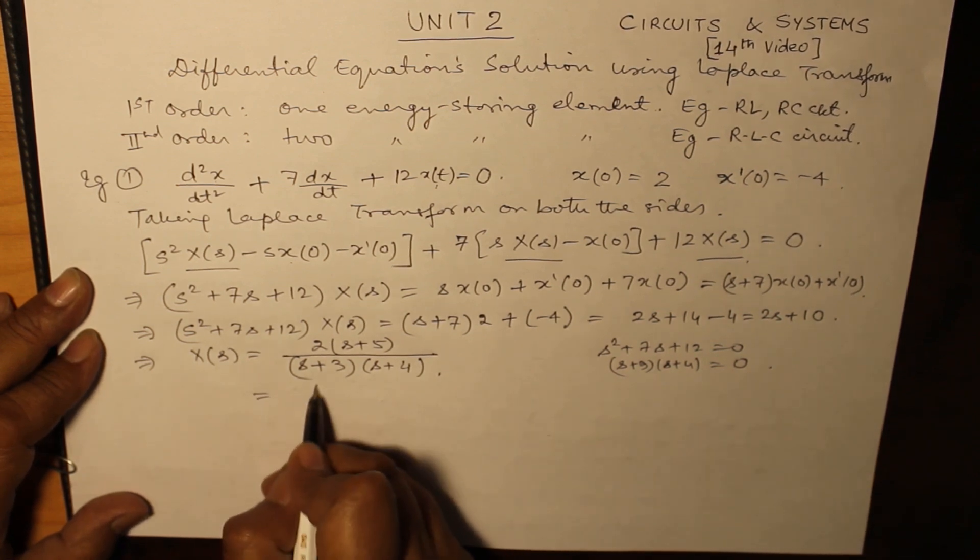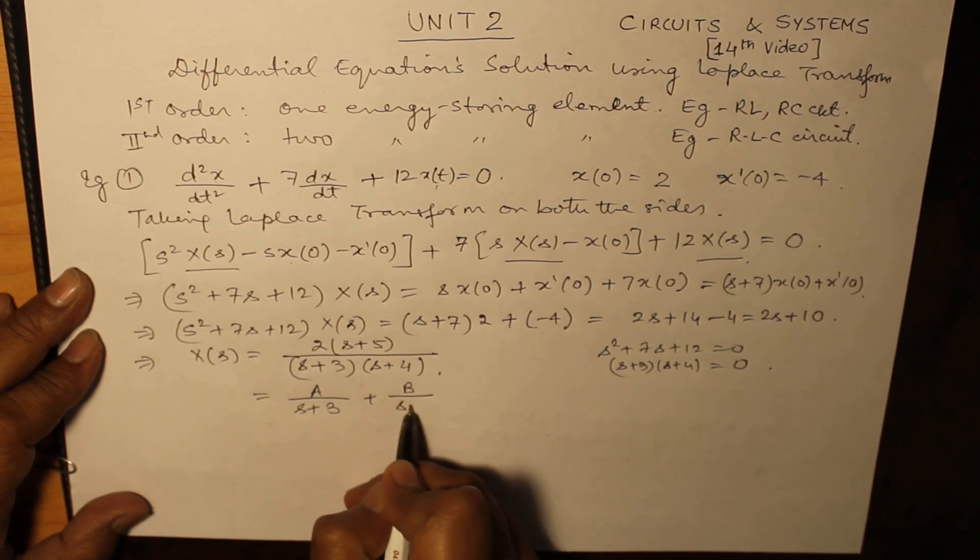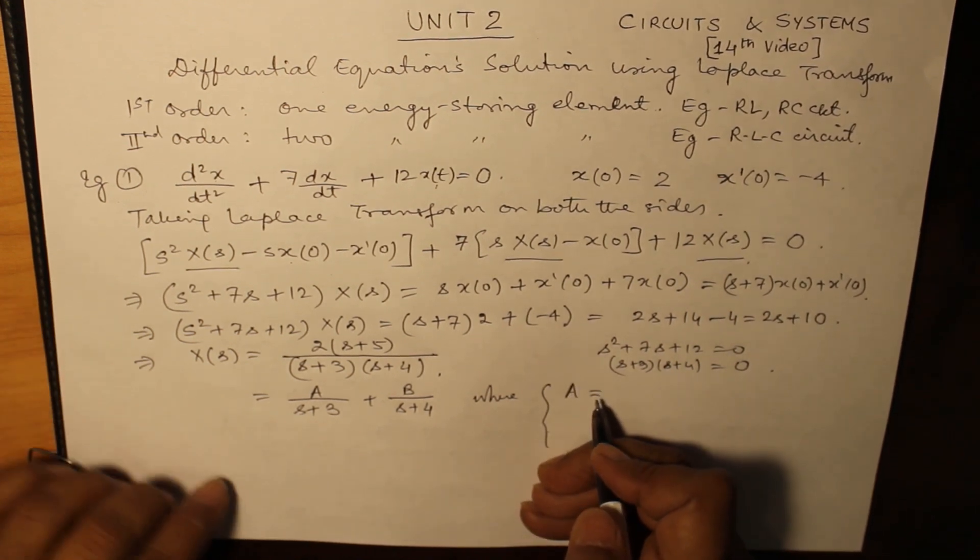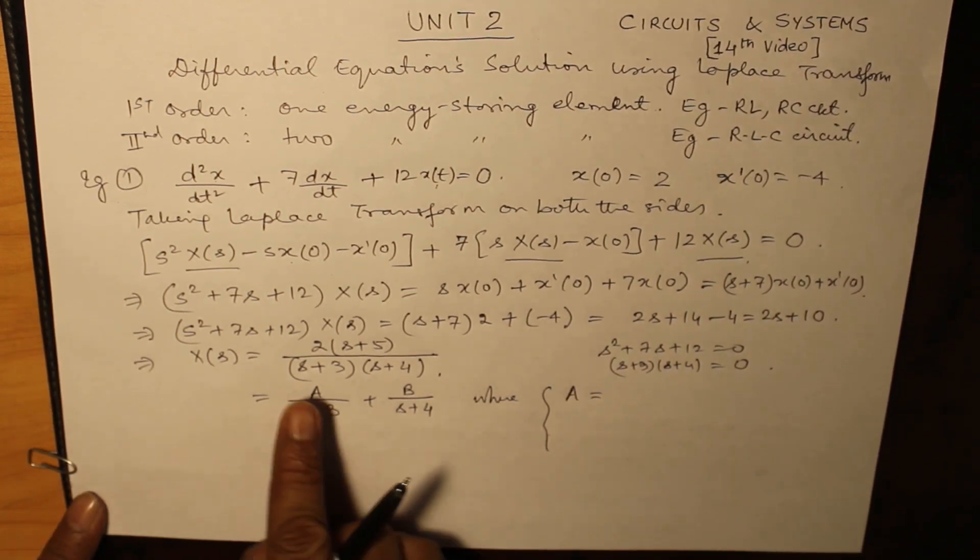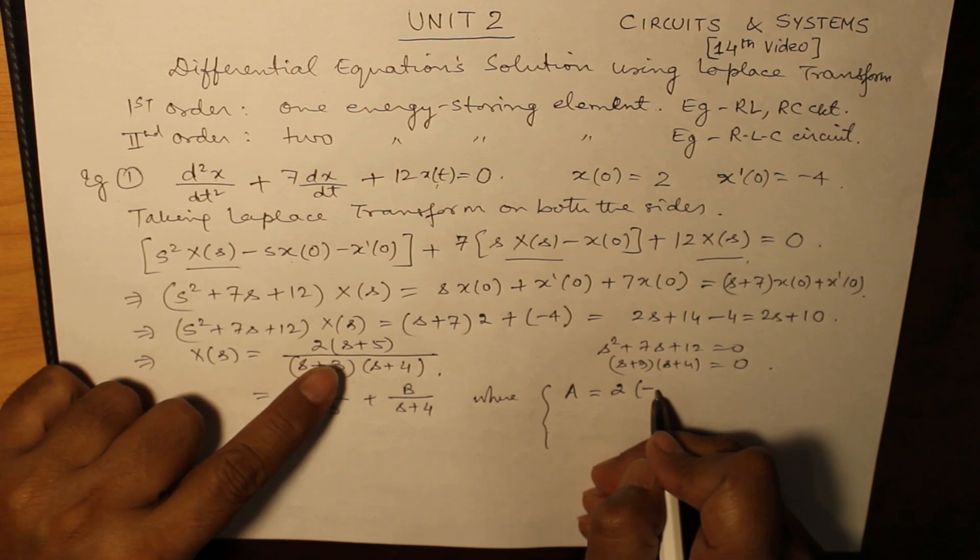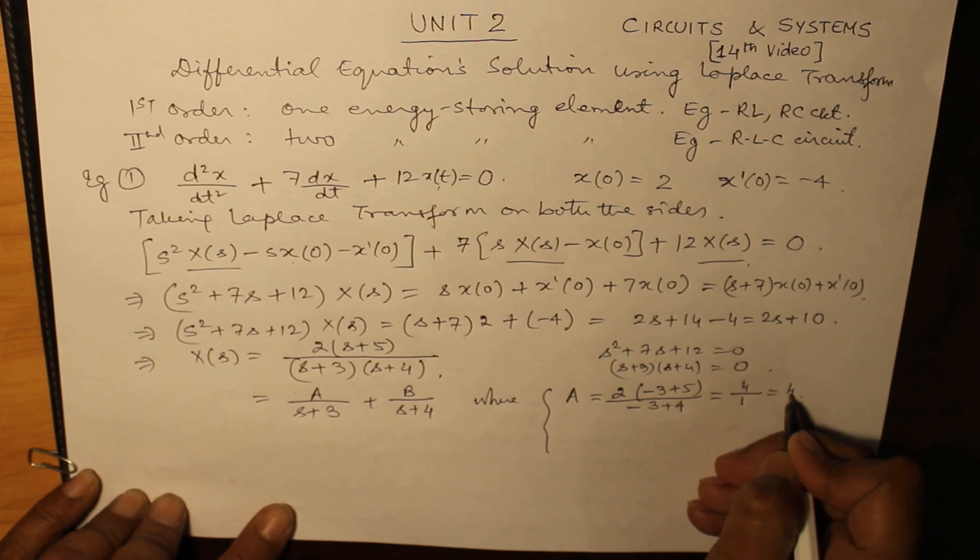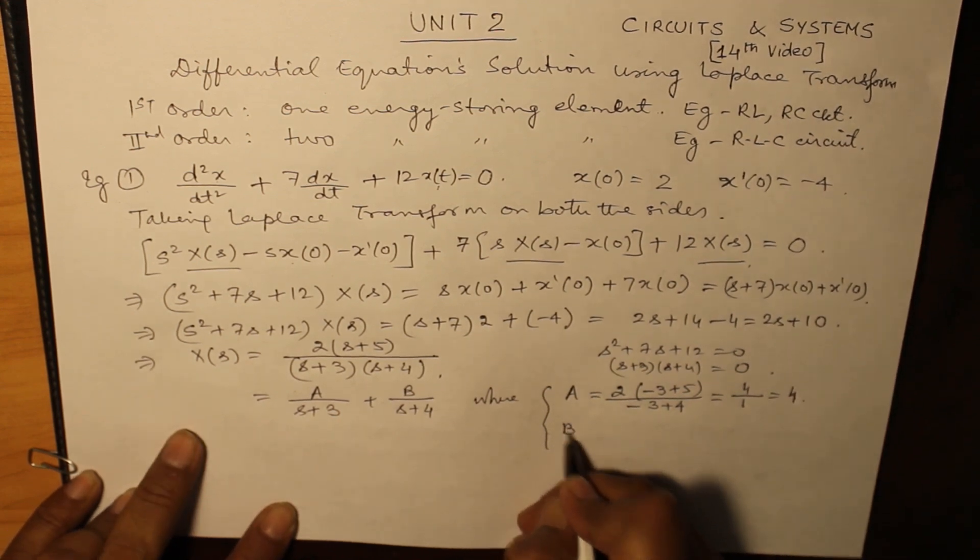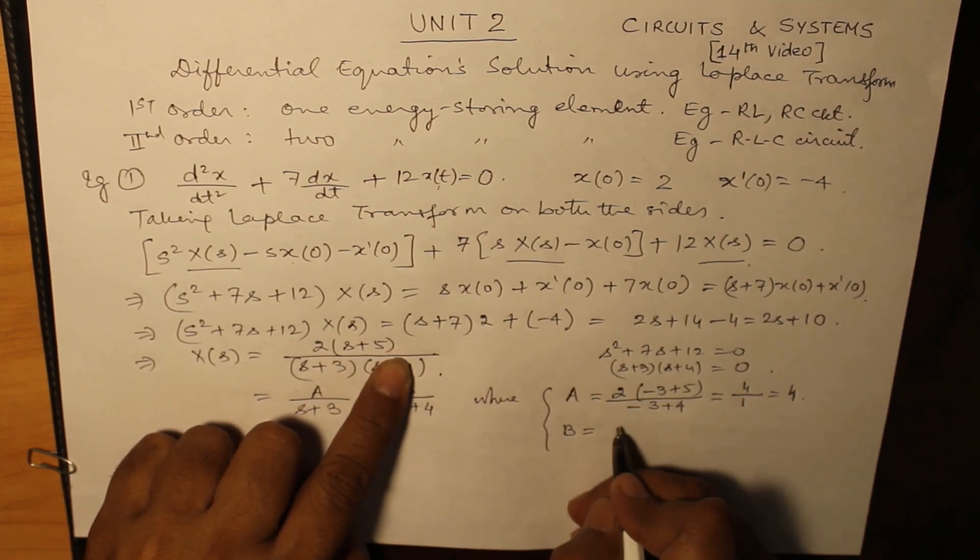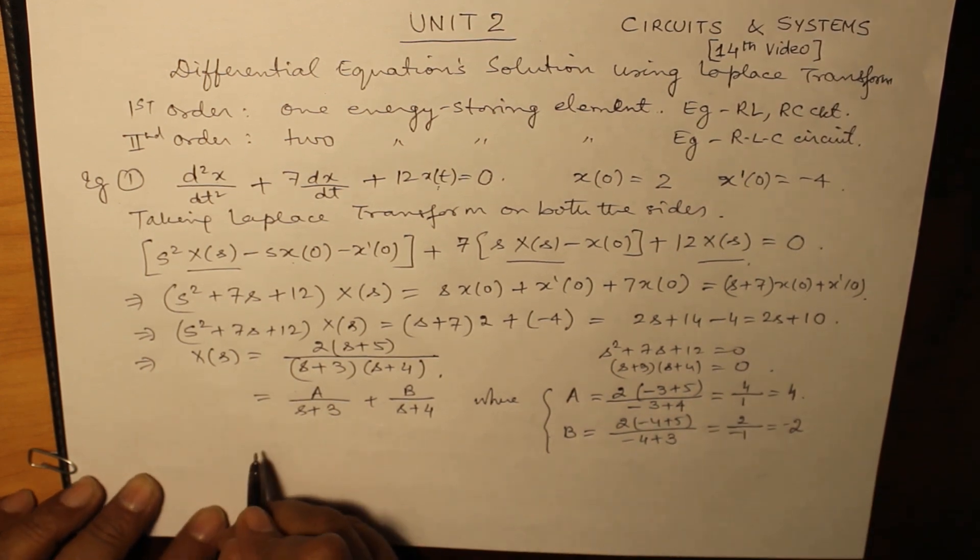Now we take the partial fraction. A is equal to, when you want to find out the value of A, put your finger on s + 3 and put s is equal to -3. So that gives you 4, and B is equal to putting hand on s + 4 and putting s is equal to -4. That is -2. Putting these values here.